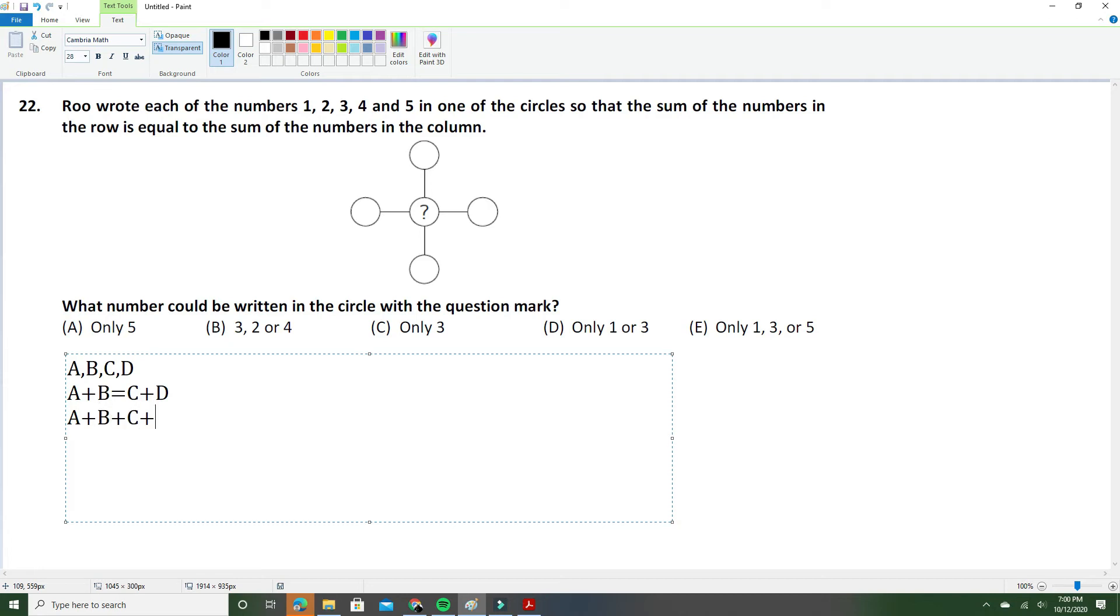Now another thing we can conclude which will solve this problem for us is that we can only have odd numbers in the center, because if you look at the numbers here—1, 2, 3, 4, and 5—you see that there are only two even numbers, and it says that the row plus the column will have to be even as we concluded earlier.